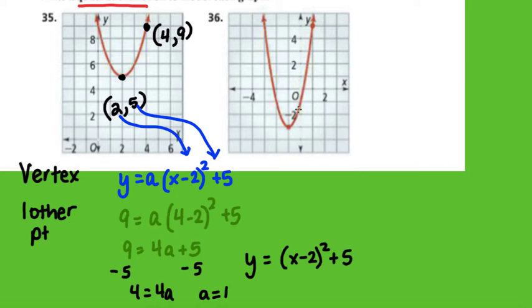Now I want you to try it on number 36. So let's first identify your vertex. It appears our vertex is negative 1, negative 3. And then a point on the graph right up here is 1, 5. So you have your point, you have your vertex. Now I want you to write an equation of your function.